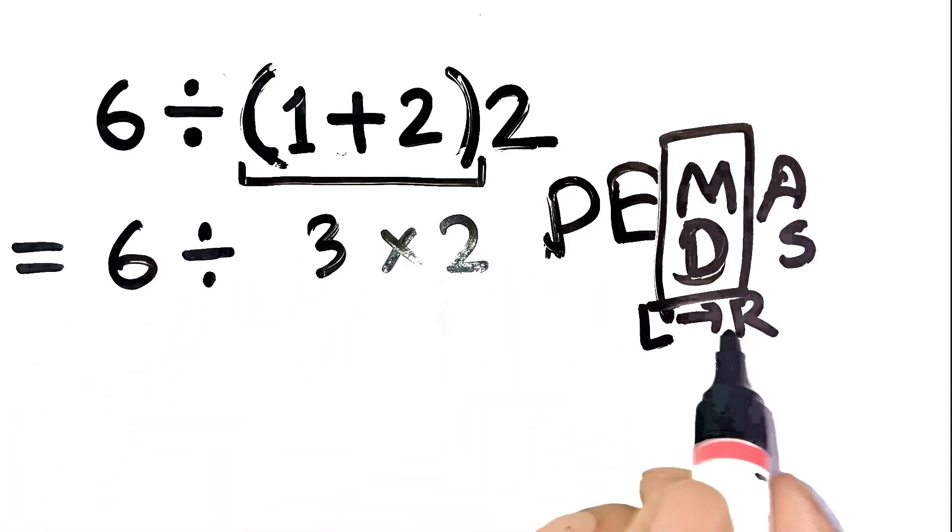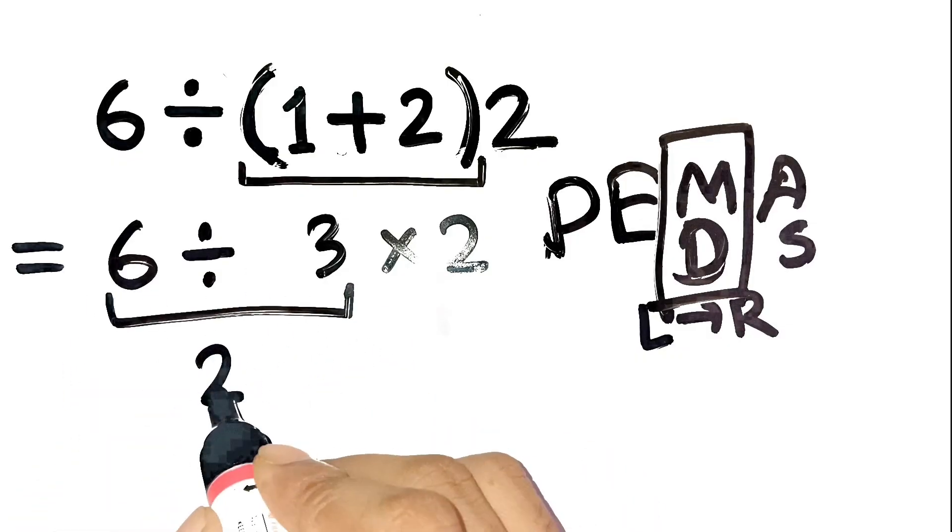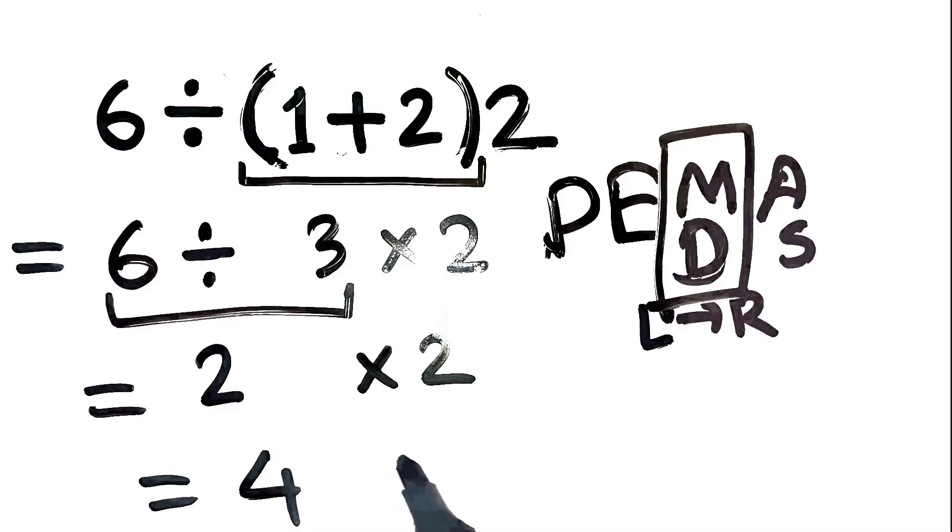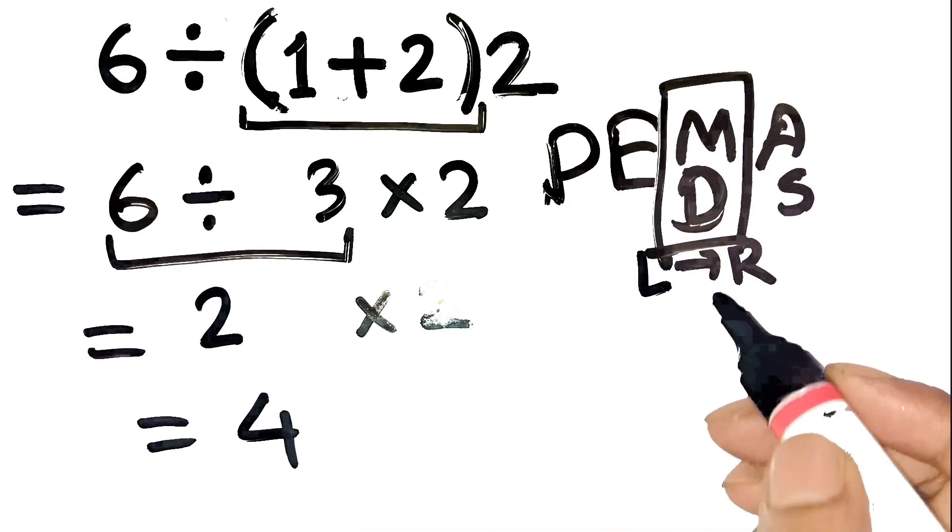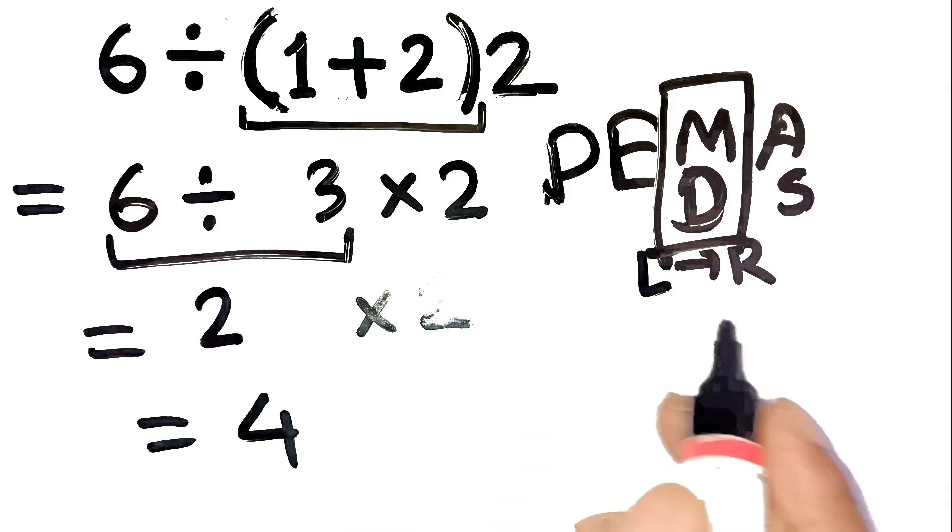Next, left to right. 6 divided by 3 is 2. Then 2 times 2 equals 4. That's it. Just follow left to right with division and multiplication, and you get the right answer.